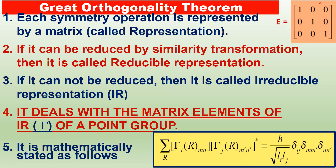If the matrix can be reduced — for example, a 6×6 matrix reduced to a 2×2, 3×3, and 1×1 — by means of similarity transformation, then it is called a reducible representation. If the matrix cannot be reduced, then it is called an irreducible representation. We have already studied what irreducible representations are.